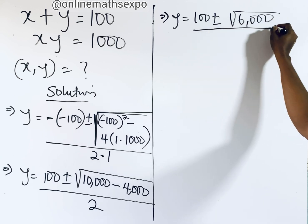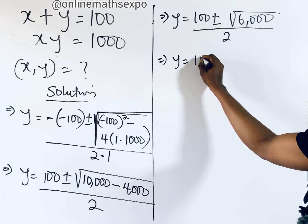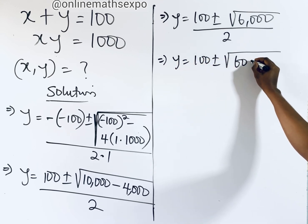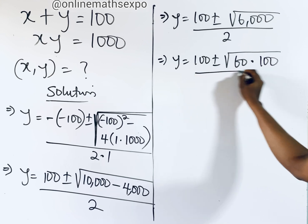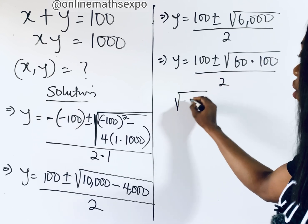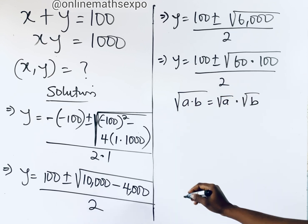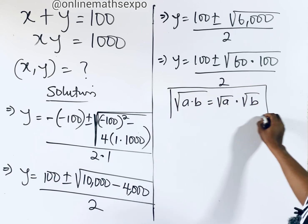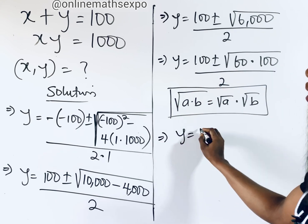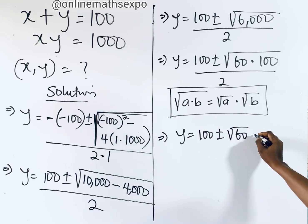We can rewrite 6,000 as 60 times 100, so the square root of 6,000 becomes the square root of 60 times the square root of 100. Remember, for every square root of a times b, it equals the square root of a times the square root of b, so we apply that rule here.